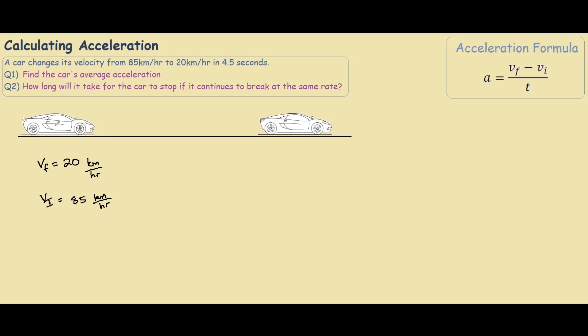And the time it took to reach from here to here was 4.5 seconds. So our T is 4.5. So before we use the formula, you can see that our units are not really the same. So we have seconds and hours. So we want to convert everything to meters per second.